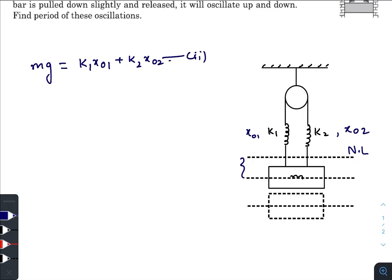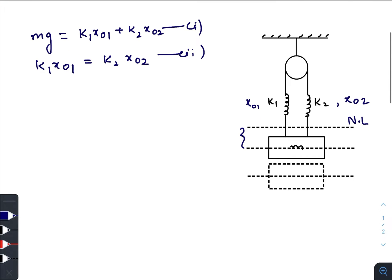Let us check our second equation. If you consider any point on the string in between the two springs, the net force on any point will be zero. At any point, the k₁ spring pulls by an amount k₁x₀₁ and the other spring pulls by an amount k₂x₀₂ in the opposite direction, so k₁x₀₁ must be equal to k₂x₀₂. This is our second equation.